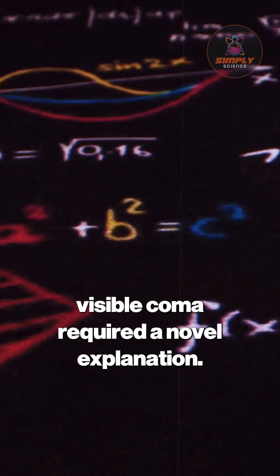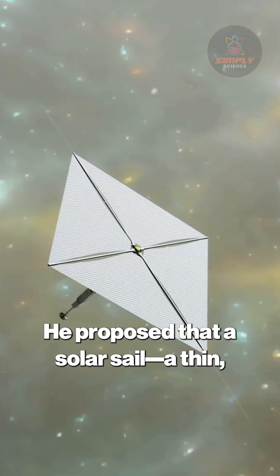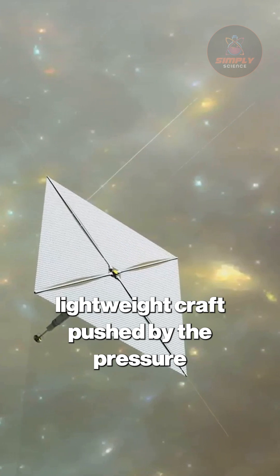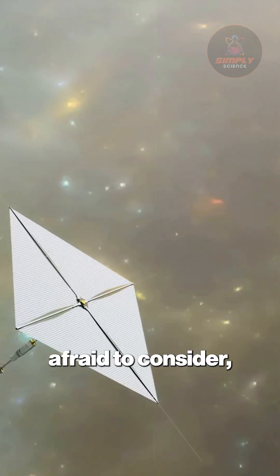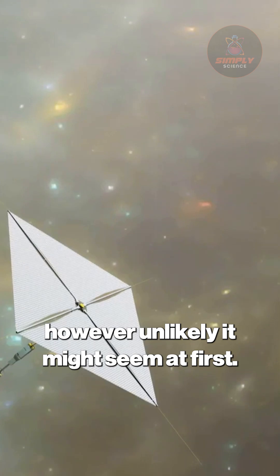He proposed that a solar sail, a thin, lightweight craft pushed by the pressure of sunlight itself, was one such possibility that science should not be afraid to consider, however unlikely it might seem at first.